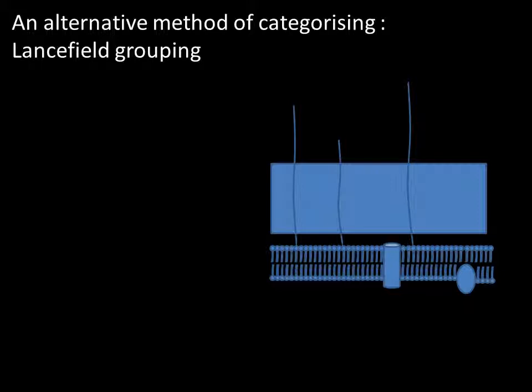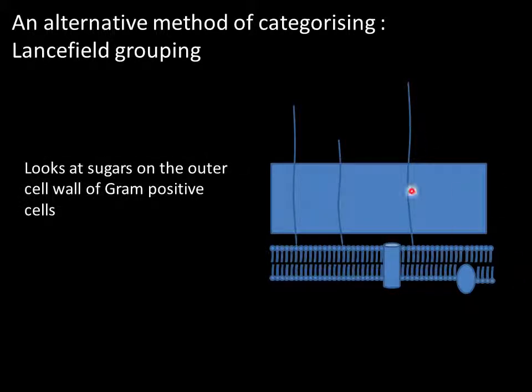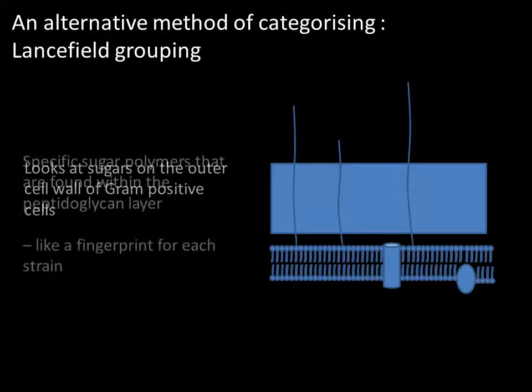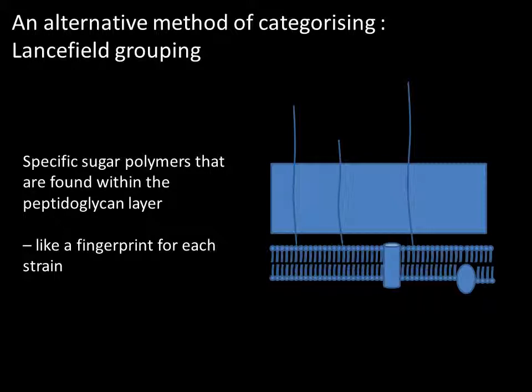As well as looking at the ability of streptococci to grow on blood, there is another way to group streptococci - looking at antigens present in the cell wall. This is sometimes referred to as Lancefield grouping, or specifically Lancefield antigens, named after scientist Rebecca Lancefield, a very eminent microbiologist who did research into the cell wall of gram-positive bacteria. What she looked at were sugars scattered throughout the cell wall, and she found specific sugar polymers that seemed to be found within some strains of streptococci and not others, acting like a fingerprint for each strain or species.